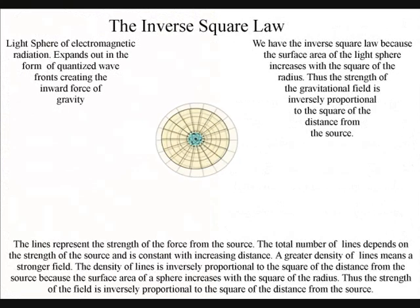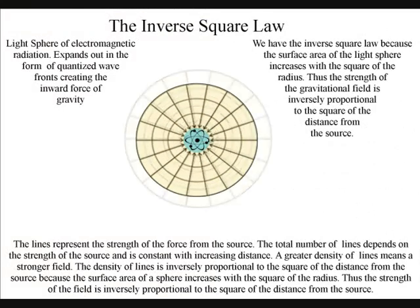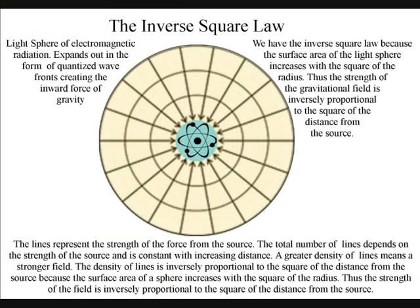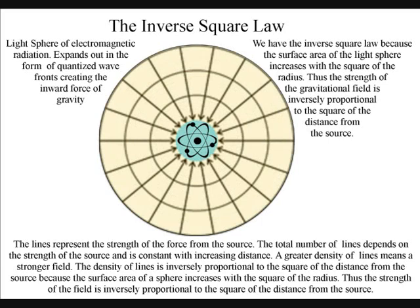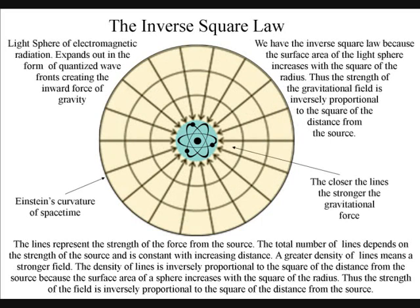We have the inverse square law because the surface area of the light sphere increases with the square of the radius. Thus the strength of the gravitational field is inversely proportional to the square of the distance from the source.